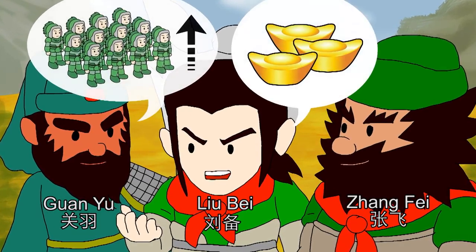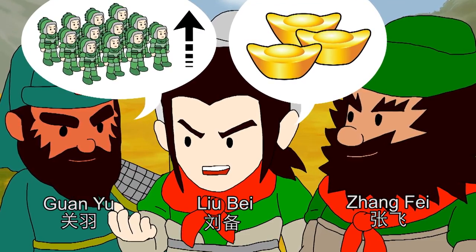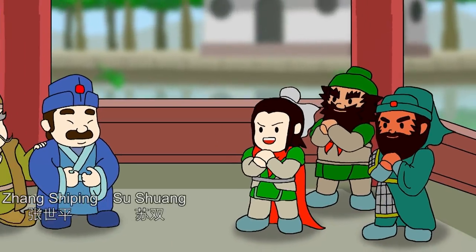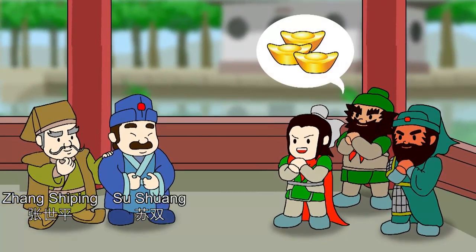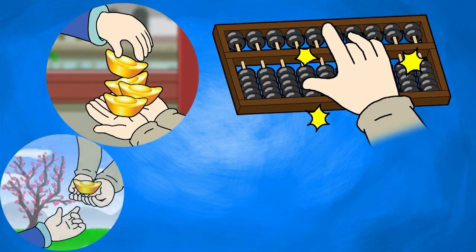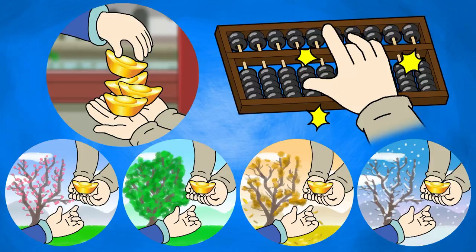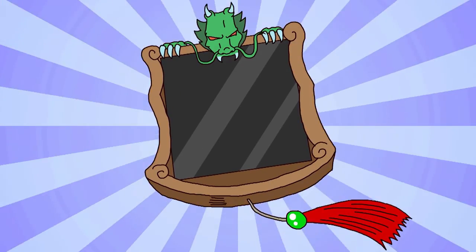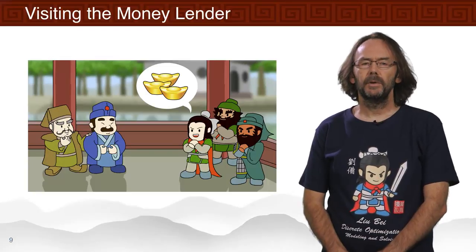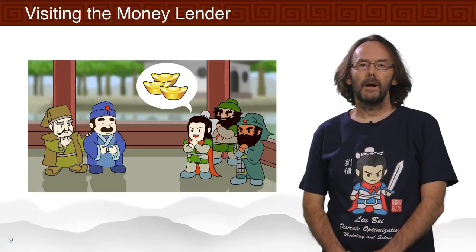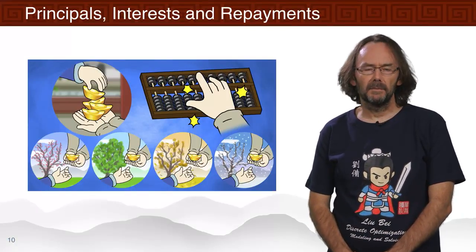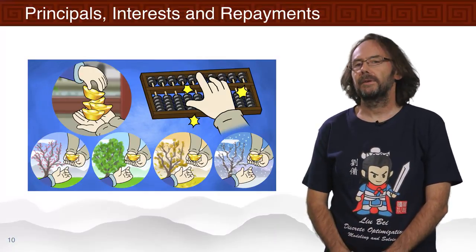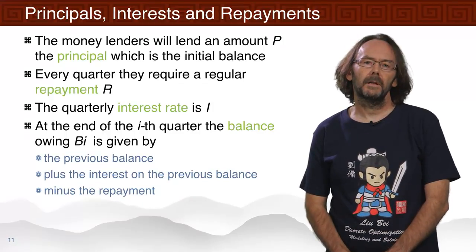The brothers observed a shortage of soldiers and planned to recruit more, but needed to loan money from businessmen. Zhang Shiping suggested asking his friend Su Shuang for the loan. Su Shuang agreed, provided they repay the loan plus interest over four instalments in the following year. Liu Bei tried to figure out how much they needed to pay back each instalment. Our heroes go to the moneylender, who will lend them money with a repayment required at the end of every season, that is every quarter.